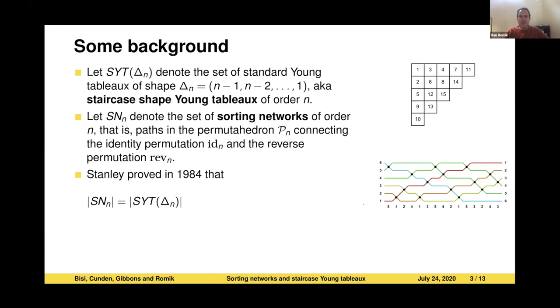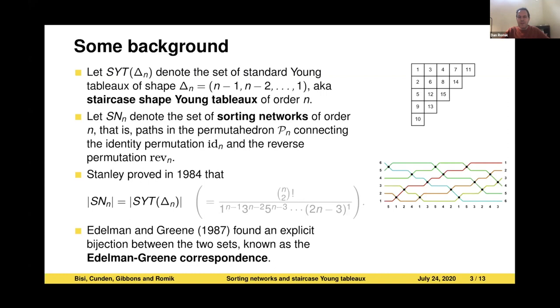Those two sets are very strongly related to each other. Stanley proved the famous result in 1984, which is that those two sets are equinumerous. They have the same number of elements. The number of standard Young tableau of staircase shape is equal to the number of sorting networks of order N. As a side remark, this number, we can actually enumerate it. The Hoechlin formula gives us a nice product formula for what this number is. But the main thing is that the cardinality of those two sets are equal. Edelman and Green, a short time later, found a very beautiful bijection between these two sets. That's what is now known as the Edelman-Green correspondence. Maybe I should mention these two examples of a sorting network and standard Young tableau are related to each other by the Edelman-Green bijection. I will refer to these examples again in the next few slides.